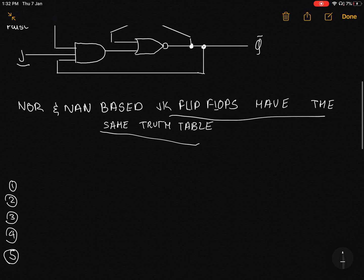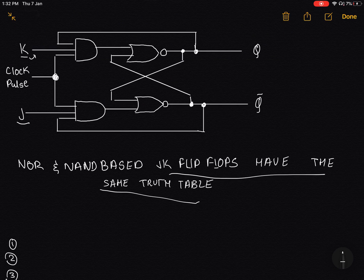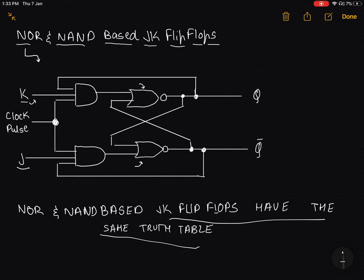I will not be drawing the NAND based JK flip flop because it's quite similar. Just change the NOR gates over here and here to NAND gates. One more thing in the CIE papers, you might actually get different diagrams for JK flip flops.